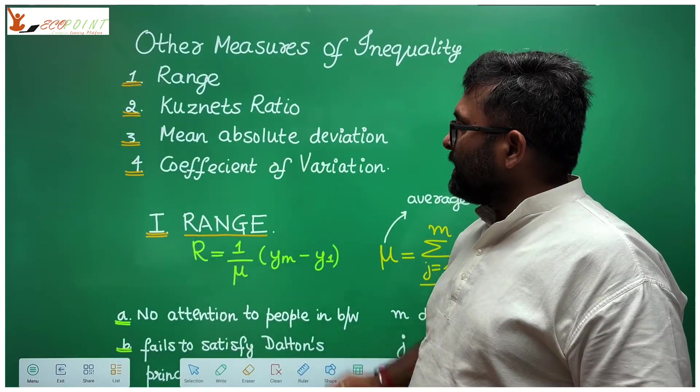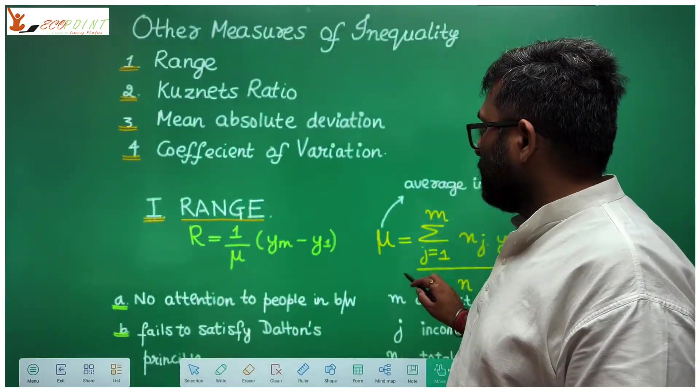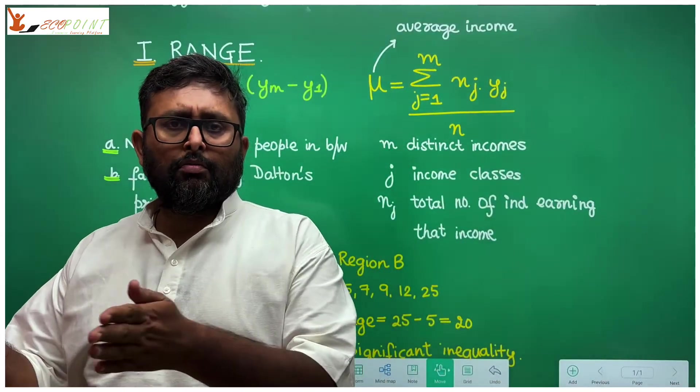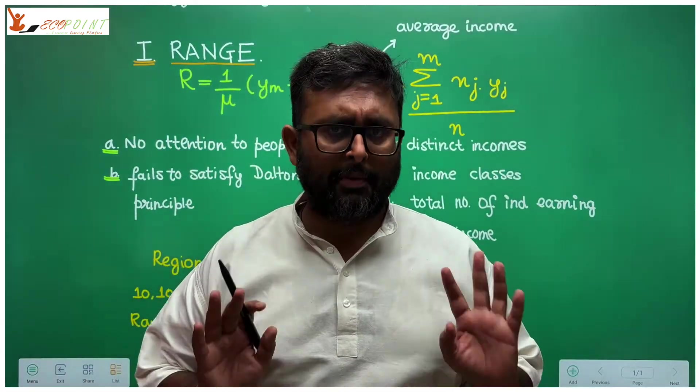Range, Kuznets ratio, mean absolute deviation, coefficient of variation. Let us look at range first. Range is just going to tell you maximum minus minimum. Maximum income minus minimum income.